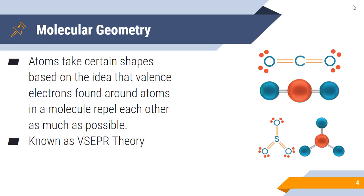Atoms take certain shapes, and these shapes are based on the idea that the valence electrons found around the atoms in a molecule repel each other as much as possible. This makes sense when we think about Coulomb's law, which states that opposites attract and similar charges repel. Electrons on the outside of an atom or lone pair electrons are negatively charged, so they repel other negatively charged particles as much as they possibly can. This is known as VSEPR theory — valence shell electron pair repulsion theory.